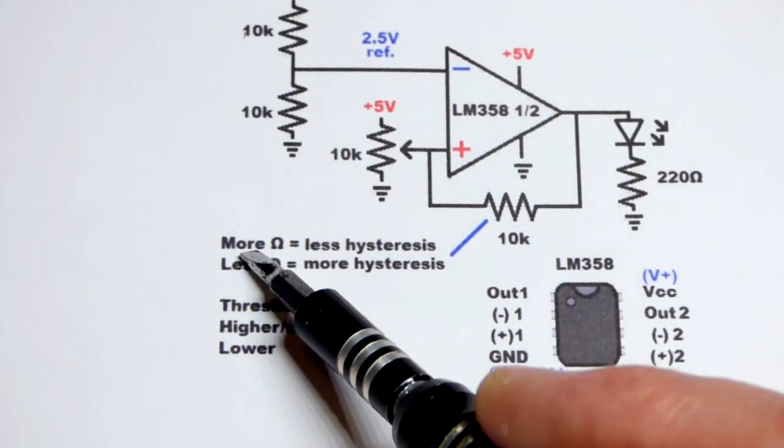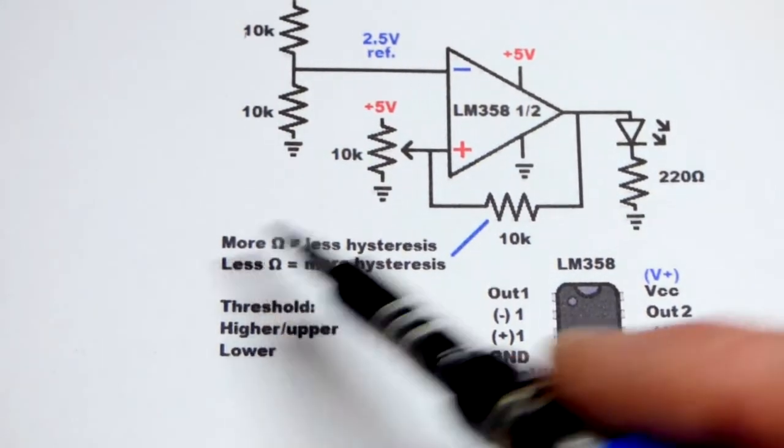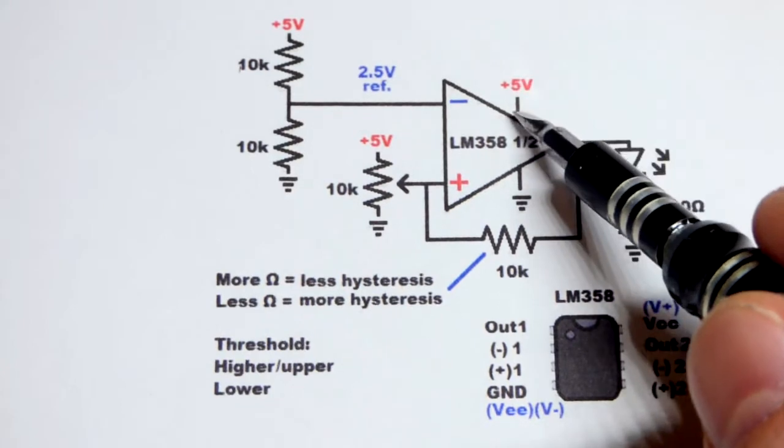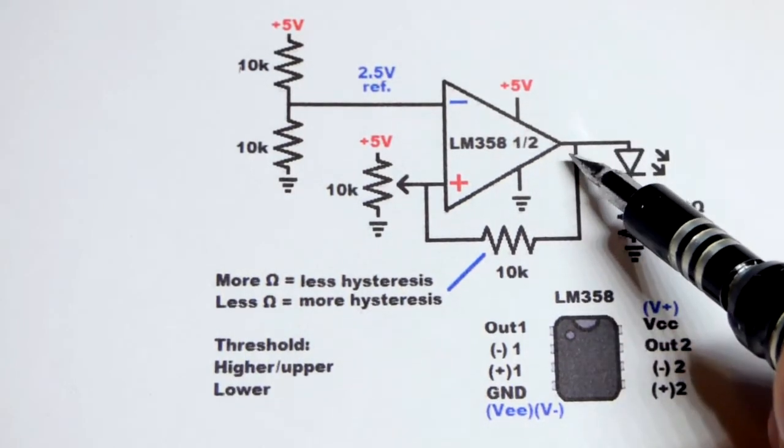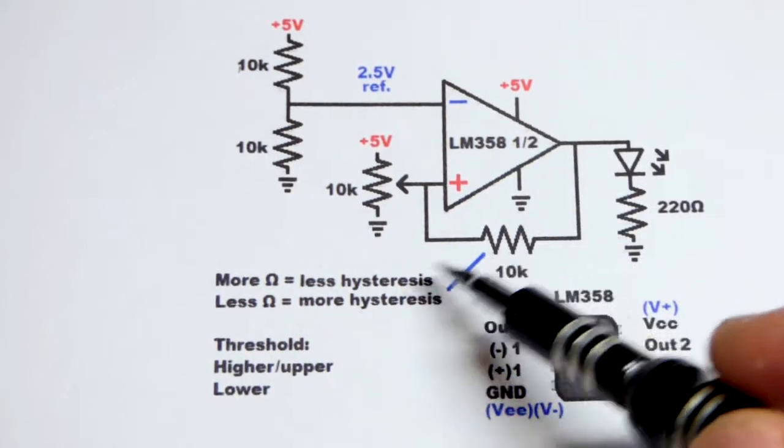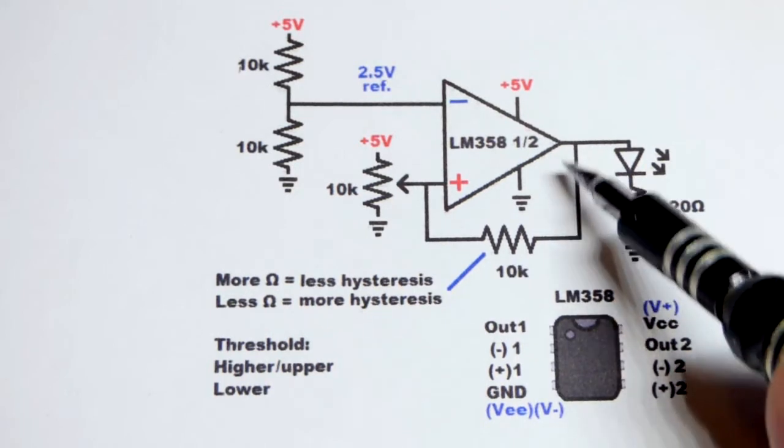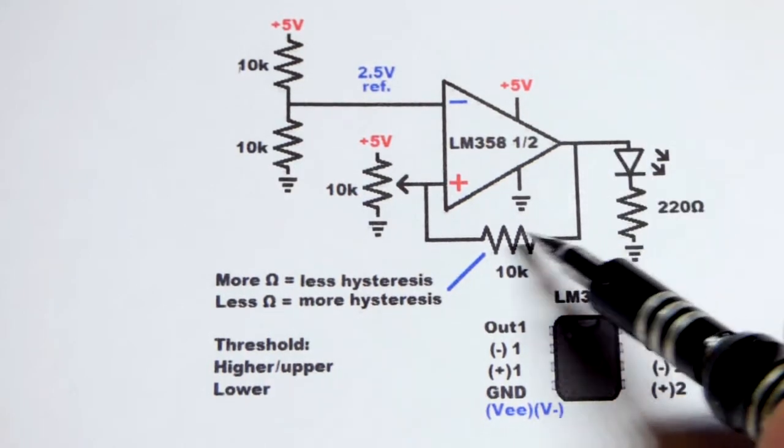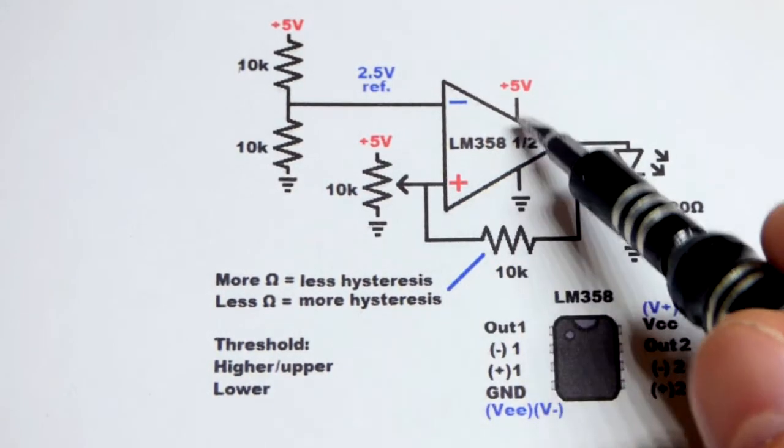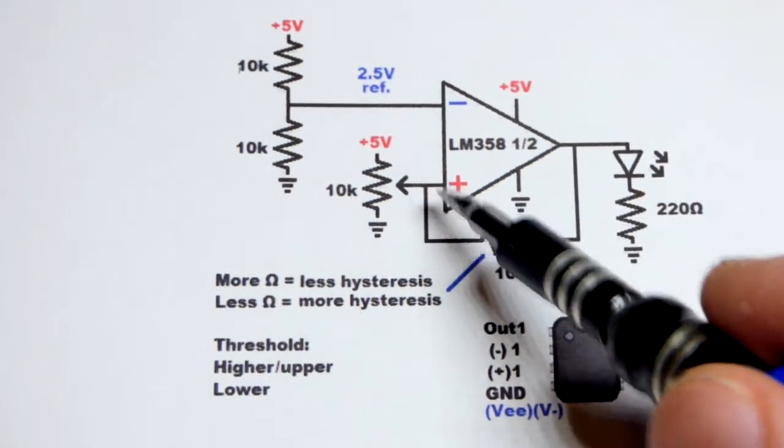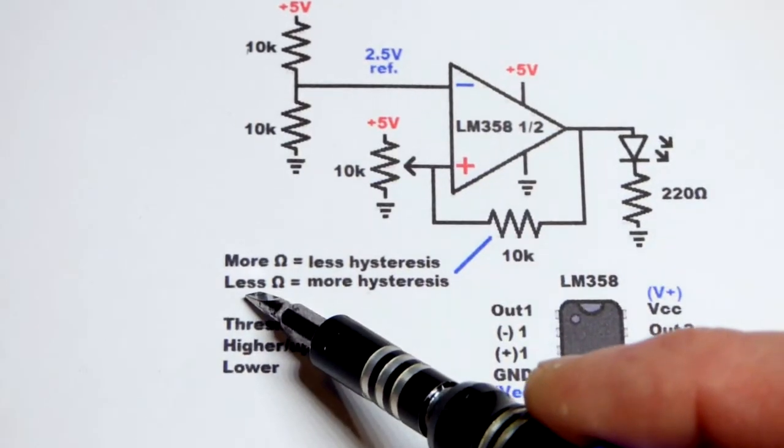And if we used a higher value resistor, then if the output is high, there's more resistance than a lower value. And thus it would not connect as well. So you'd still have some hysteresis. It'd have some effect, but not as much.